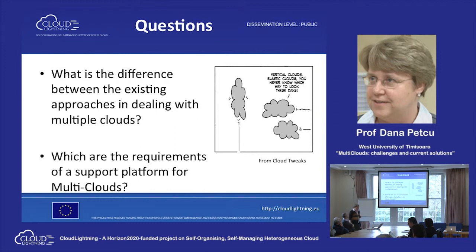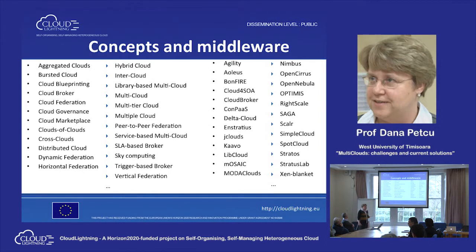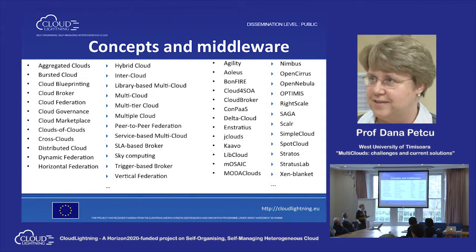The main questions I want to address are: what are the differences between existing approaches for dealing with multiple clouds, and what are the requirements of a support platform for multi-clouds? We have a lot of names and cases when talking about multiple clouds — aggregated clouds, burst clouds, and so on — used in the literature. One objective of our team's research in ModaClouds and MOSAIC was to bring order to this and classify them, establishing relationships between them and associating tools that partially solve the requirements.